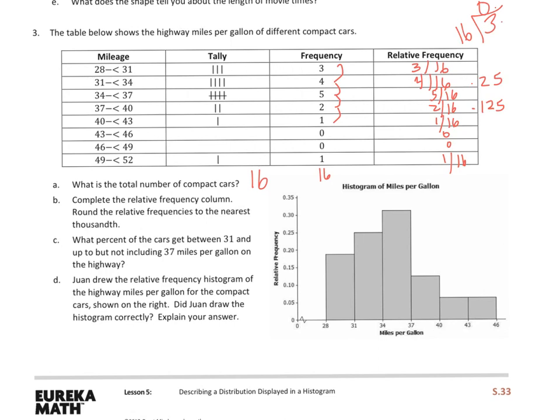And that'll help out with the bottom part of this. And we see that C says, what percent of cars get between 31 and up to, but not including, 37 miles per gallon on the highway. So we start at 31 up to 37, but not including it. So I'm looking at these two bars. So I got about 25, and what looks like it could possibly be 32, but I'm not going to do it based on this. I'm going to actually use the values that I pulled from up here. So that'll help you to get a little bit more precise.